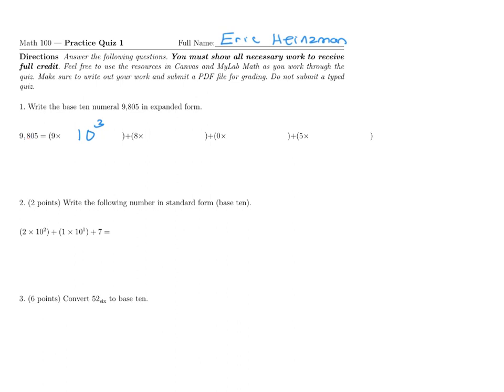Moving on to this 8, 8 is in the hundreds place, and 10 squared equals 100. There is 0 in the tens place, so that's 0 times 10 to the power of 1. And lastly, this is in the ones place, and 10 to the power of 0 equals 1. So 1 times 5 equals 5.